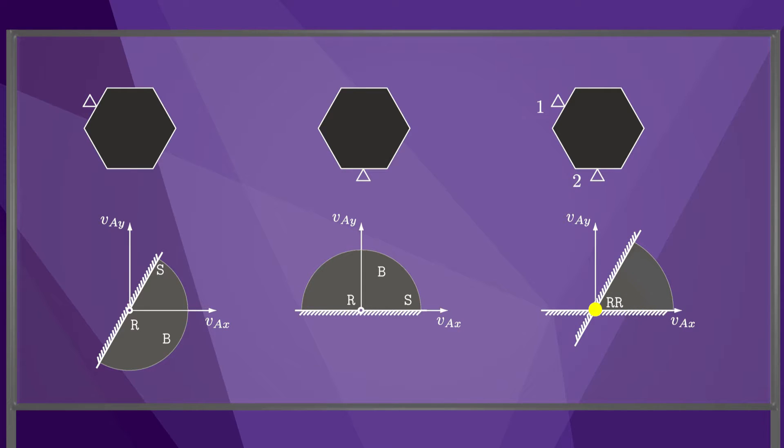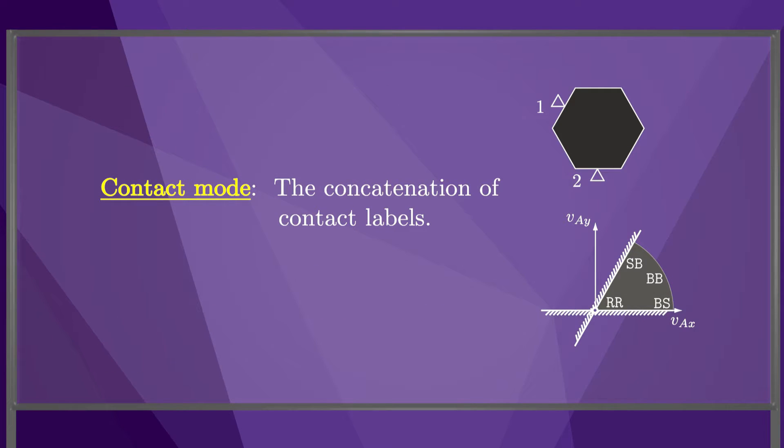A zero twist is labeled RR because the contacts are maintained and there is no sliding. Twists strictly inside the cone are labeled BB as they cause breaking at both contacts. The concatenation of the labels for each contact is called the contact mode. The two contacts in this example allow four possible contact modes.